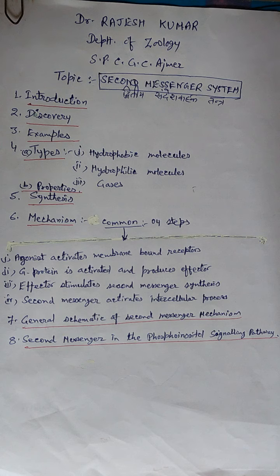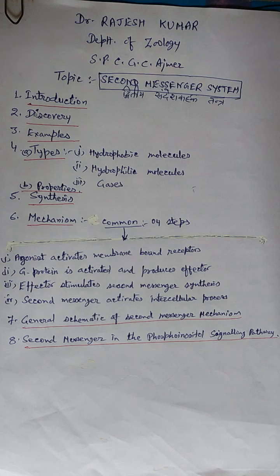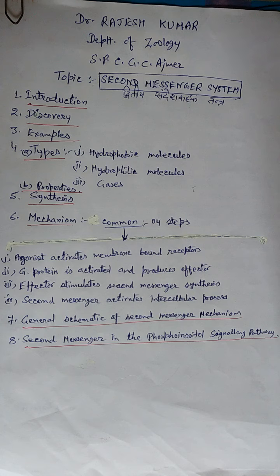Examples of second messenger molecules include cyclic AMP (cyclic adenosine monophosphate), cyclic GMP (cyclic guanosine monophosphate), inositol triphosphate (IP3), diacylglycerol (DAG), and calcium. The first messengers are extracellular factors, often hormones or neurotransmitters such as epinephrine, growth hormone, and serotonin.